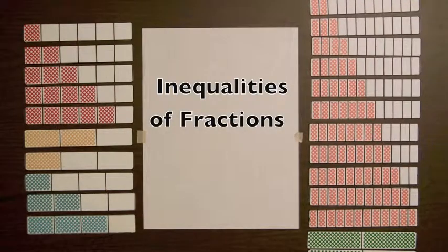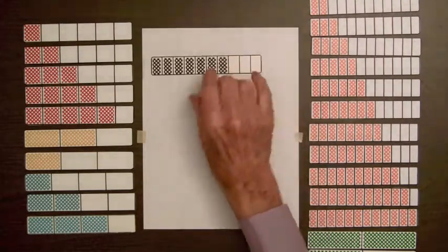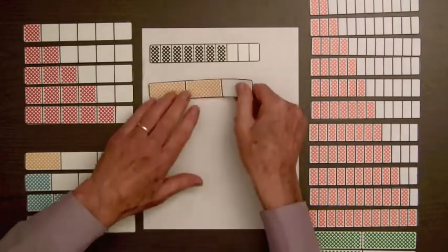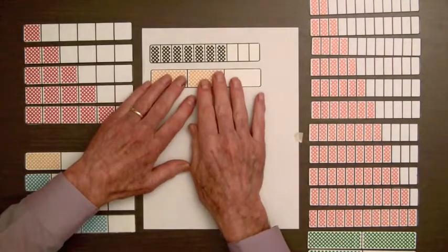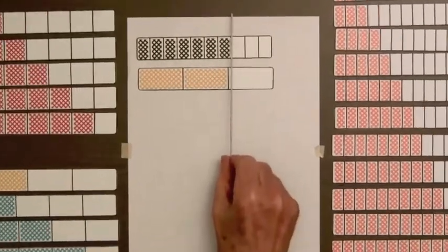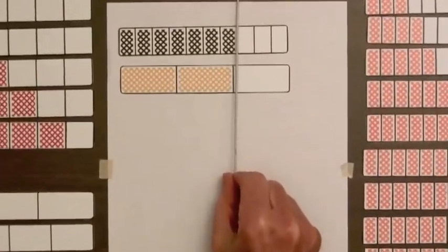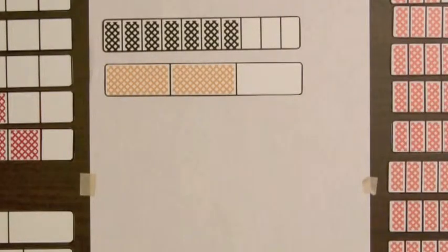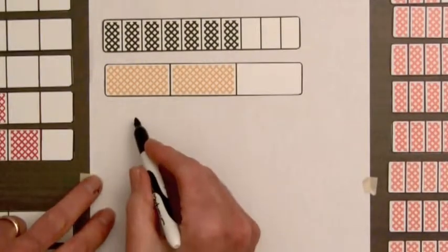Let's begin by finding an inequality for 7 tenths and 2 thirds. Now we can see from these bars that 7 tenths is a little bit greater than 2 thirds. But we are not always going to have fraction bars to determine inequalities, so we are going to see how we can do this for fractions.